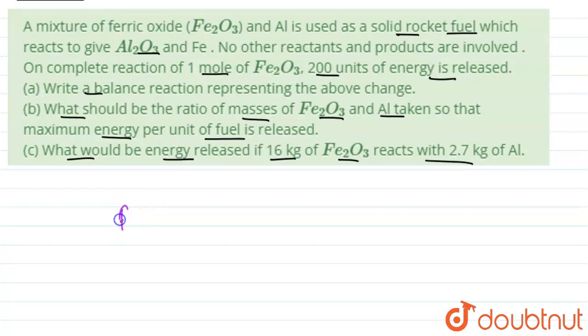So the reaction is very simple: Fe2O3 is getting reduced by Al such that Al gets oxidized to Al2O3 and iron oxide gets reduced to iron. This is ferric oxide which is reduced to iron plus we get energy.